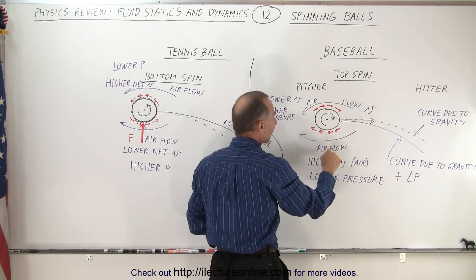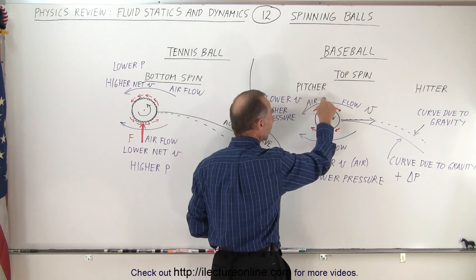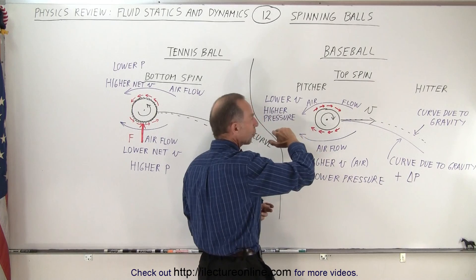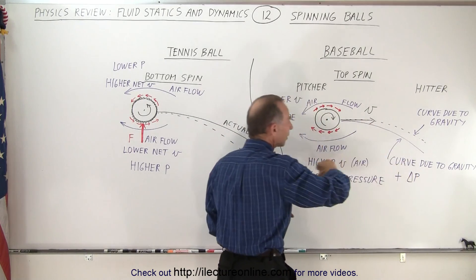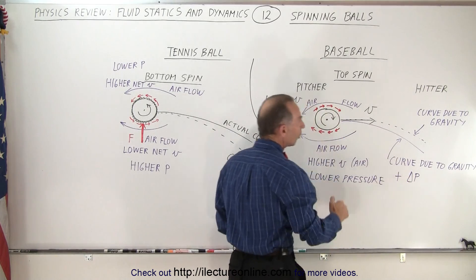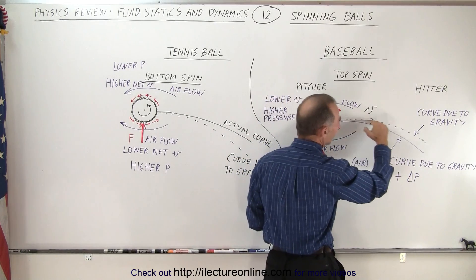Faster velocity means lower pressure, lower velocity means greater pressure. So we have less pressure at the bottom. Not only does gravity pull the ball down, but the difference in pressure between the top and the bottom will pull the ball down even more. Without that difference in pressure, that's what the ball path would look like.